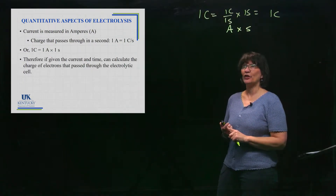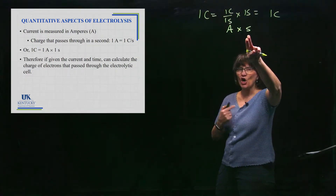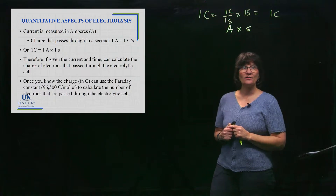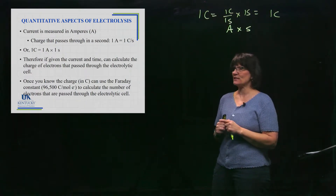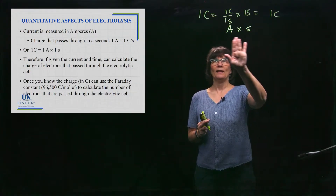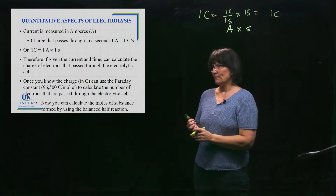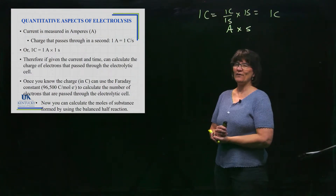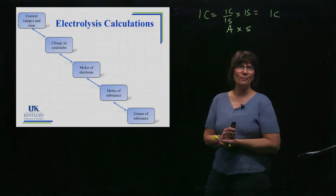If you're given the current in amps and the amount of time the apparatus runs, you can figure out how much charge passed through the electrolysis process. If you know that and you know Faraday's constant — 96,500 coulombs per mole of electrons — you can go from charge to moles of electrons. Once you have moles of electrons, you do stoichiometry to get moles of substance, then convert to grams as usual.